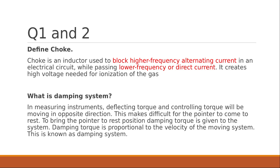What is a damping system? In any measuring instrument, the deflecting torque and controlling torque will always be moving in opposite directions. Since both these torques are moving in opposite directions, it will not let the pointer settle at rest so easily. So, to bring the pointer to rest, the damping torque is given to the system. This damping torque is always proportional to the velocity of the moving system, and this is called the damping system. It is a very important question, so please pay attention.